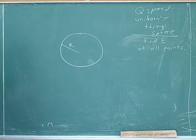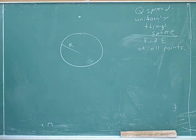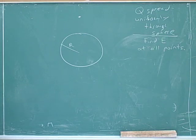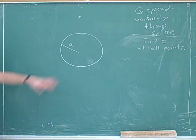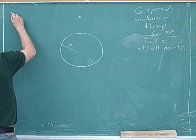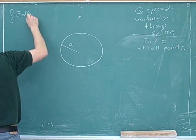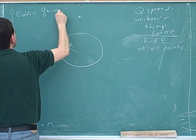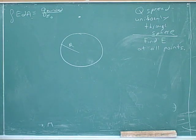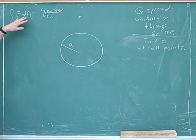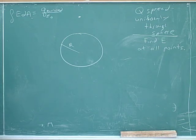We want to find the electric field at all points in space, so let's start by trying to find the electric field at a point outside the sphere. One thing we can't do is just use our old formula KQ over R squared, because remember that was for point charges, and this is not a point charge anymore. So what we're going to do is show how we can use Gauss's law in this situation. The first thing we're going to have to do is draw the Gaussian surface. This whole concept of flux is based on having a closed surface and counting how many electric field lines are exiting it, so we have to start by drawing the Gaussian surface.